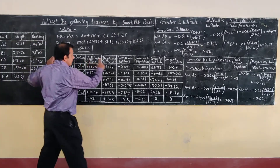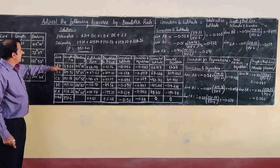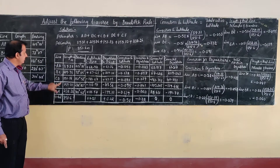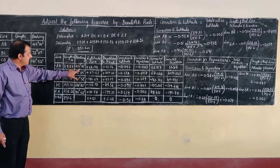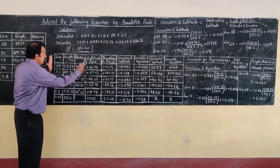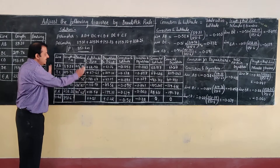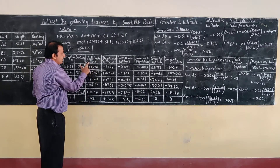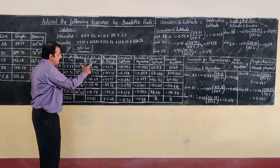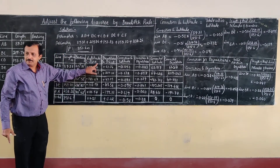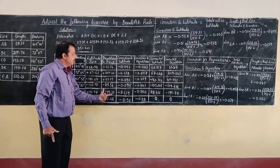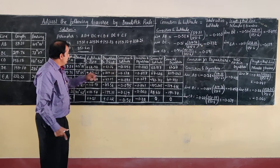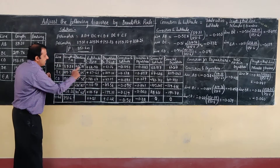First, draw a table. In this table, specify the line designation, length of the line, and bearing of the line — list all the given data. Then find the latitude of each line using the formula: latitude = L cos θ. And find the departure of each line using the formula: departure = L sin θ.